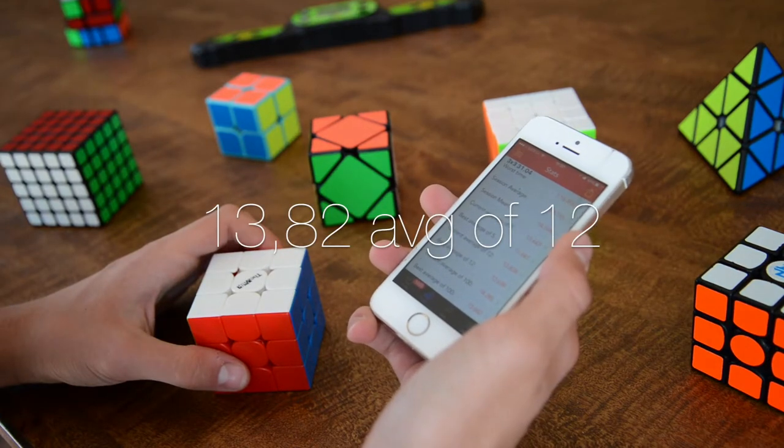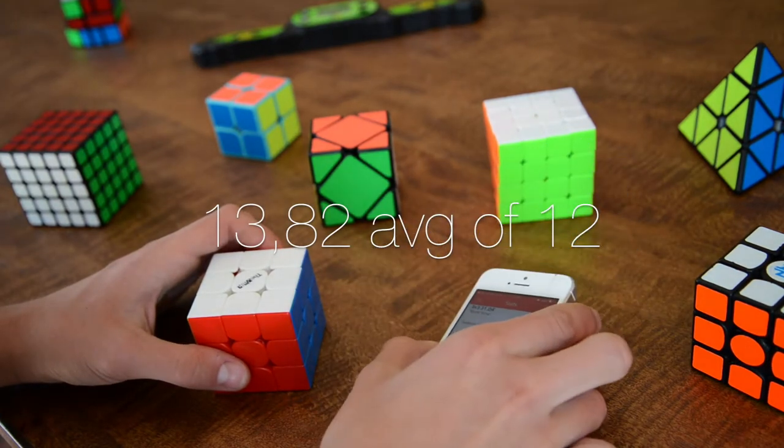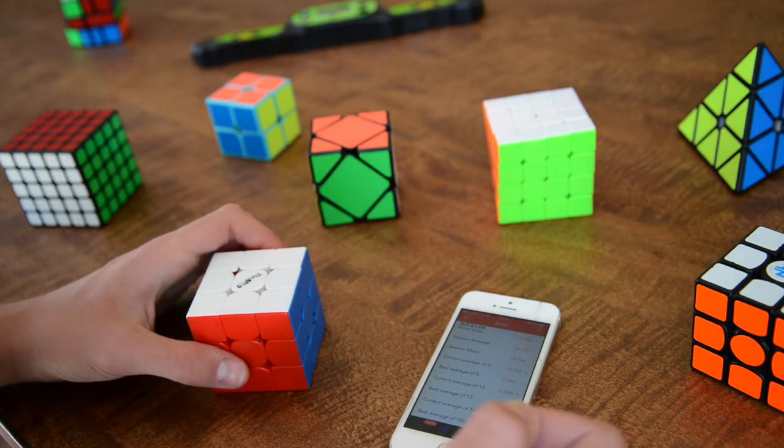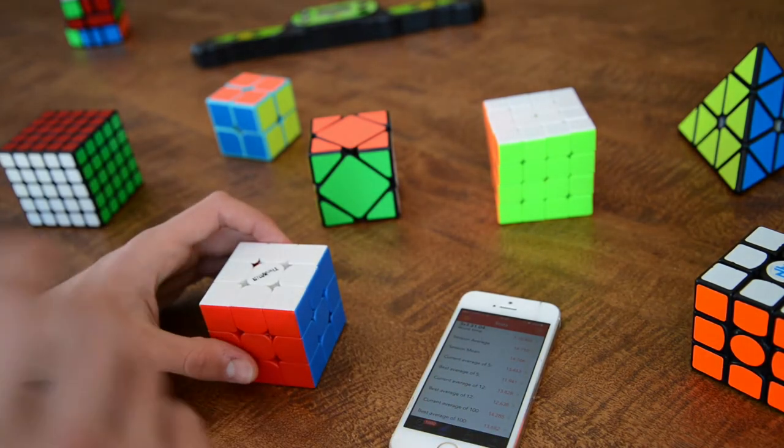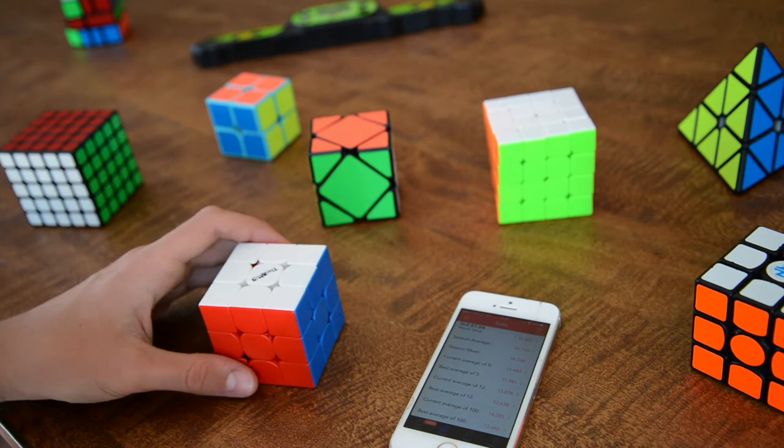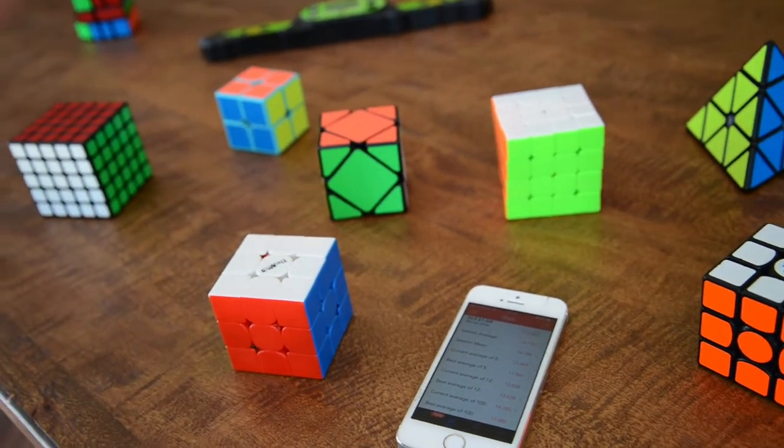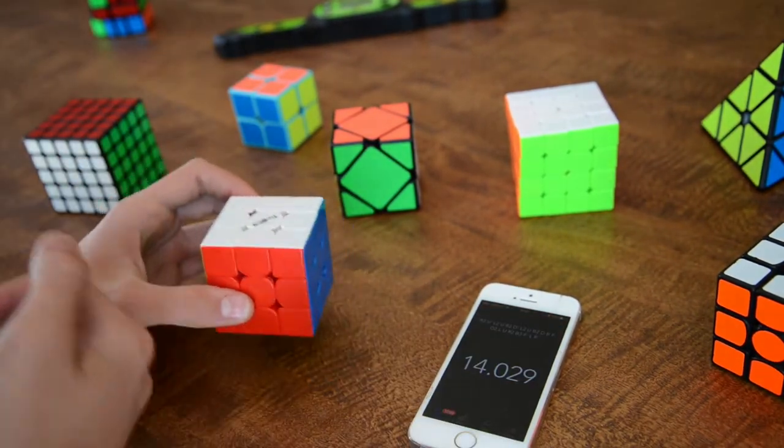That was a 13.82 average of 12, and it's a good average. So now what I really wanted to do is, since this is the first episode of Cubing with Jack season 2,